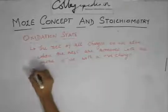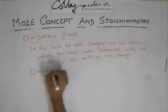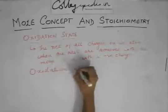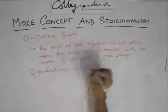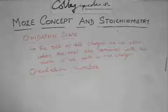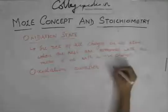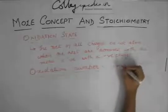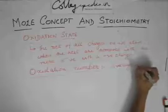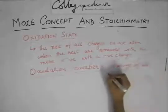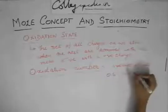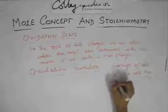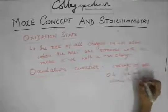There is one more term which is slightly different from oxidation state, which is called the oxidation number. The oxidation number is similar to oxidation state, just that it is the average of all oxidation states for all the atoms of a particular element.